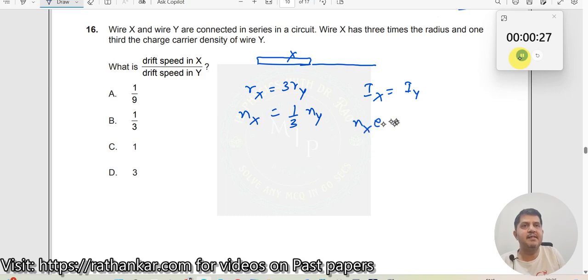Which would be n_x e A_x into v_x is equal to n_y e A_y into v_y over here. So now we want v_x by v_y. Let us take v_x by v_y here. V_x by v_y is equal to n_y e A_y divided by n_x e A_x.